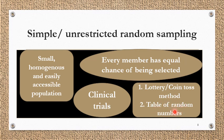Then we have the table of random numbers — already printed numbers. We label the population based on those numbers and select random numbers from the table. This is a very important sampling technique scientifically because whatever other sampling techniques we use, the last step will be random sampling to prevent bias in the study.